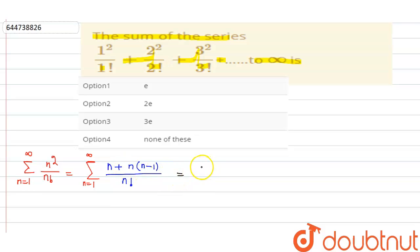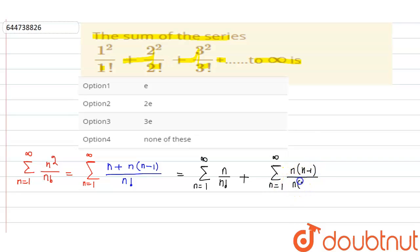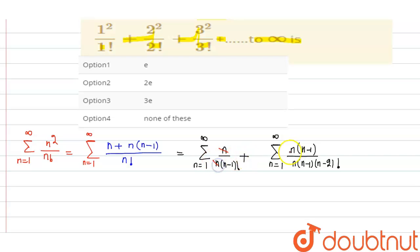Splitting the summation, we get: summation from n=1 to infinity of n upon n factorial, plus summation from n=1 to infinity of n(n−1) upon n factorial. The n factorial can be written as n·(n−1)·(n−2)! and n·(n−1)! respectively, so the n and n(n−1) terms cancel, giving us summation from n=1 to infinity of 1 upon (n−1) factorial.